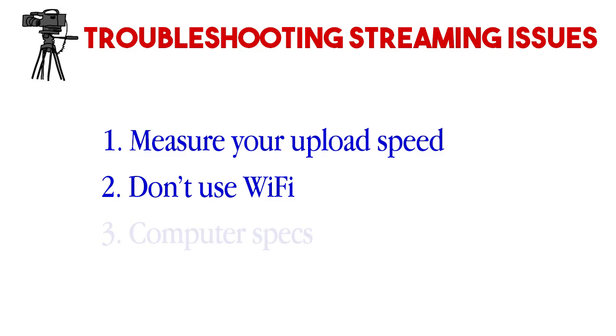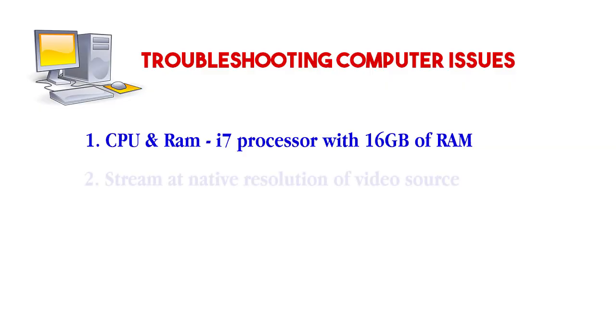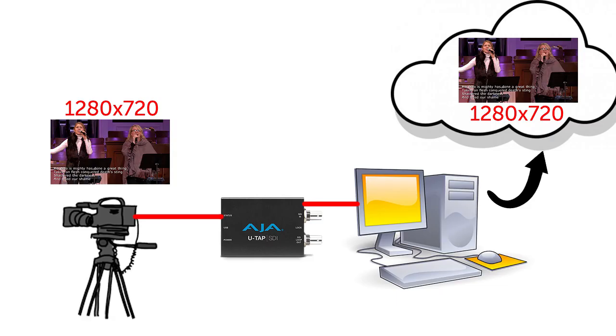If you're still having trouble, check your computer's CPU and RAM usage. I recommend using a computer with an i7 processor and at least 16GB of RAM for live streaming. If your computer's CPU or RAM are running high and causing your glitches, other than upgrading your computer, a few things you can try: first, stream at the resolution of the incoming video. Or put another way, if you want to stream at 720 resolution, make sure the video coming into your computer is 720. That way the computer isn't having to scale the video.